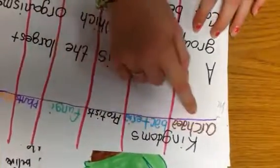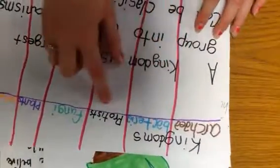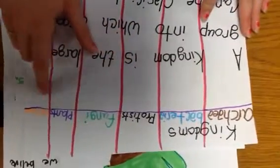The Kingdoms. The Kingdoms are archaea, bacteria, protists, fungi, plants, and animals.